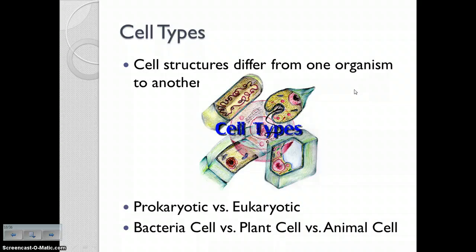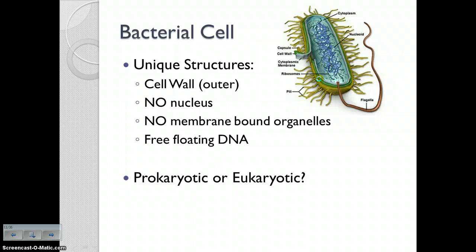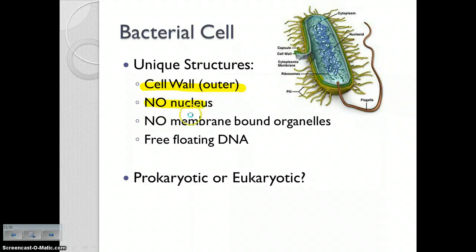Prokaryotic cells, eukaryotic cells, plant cells, animal cells, bacteria cells — they all have structures that differ from one organism to another. For example, plant cells have different structures than animal cells. Here are the defining characteristics of a bacteria cell. Every cell has a cell membrane — that little green layer here in this picture. But bacteria cells and plant cells have cell walls as their outer layer. Bacteria are prokaryotic, they do not have a nucleus or membrane-bound organelles, and their DNA is free-floating.